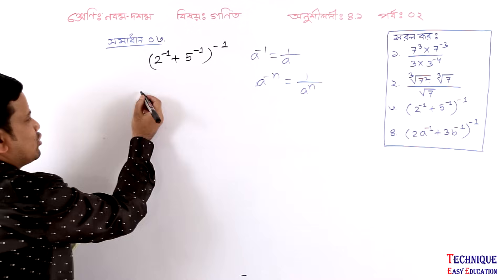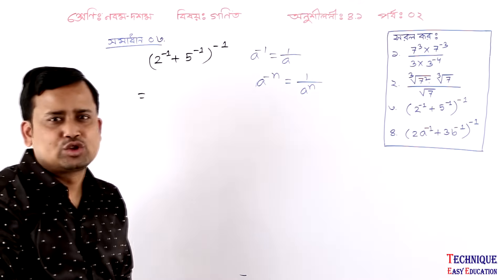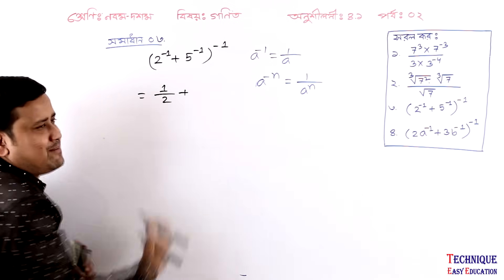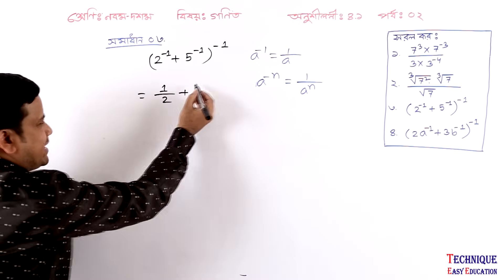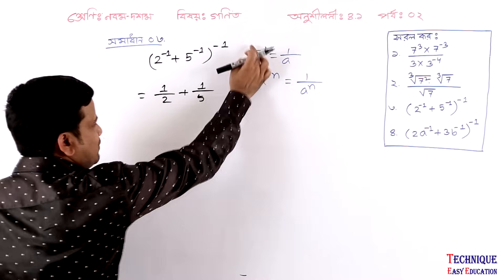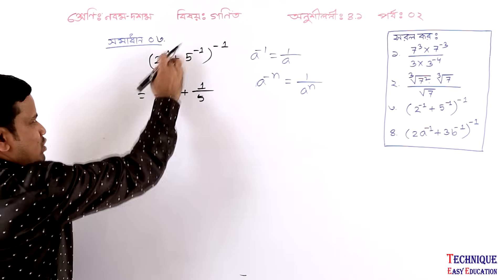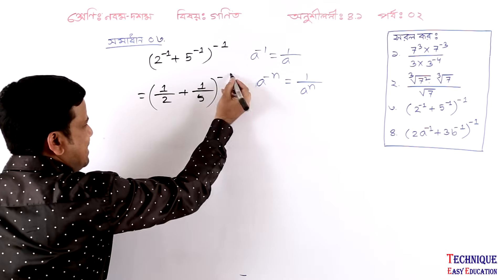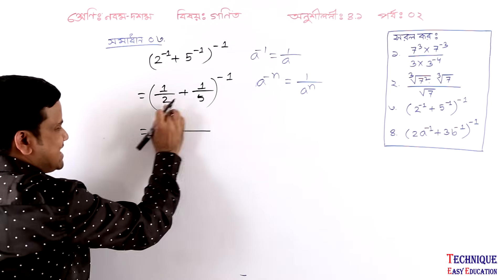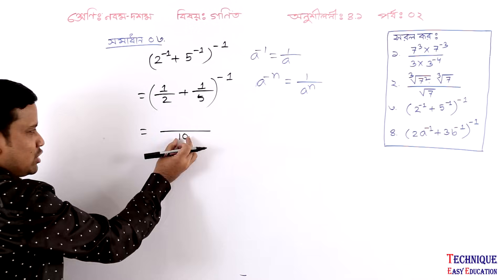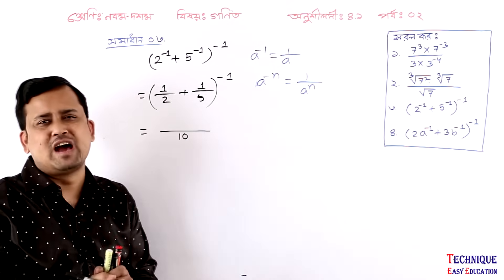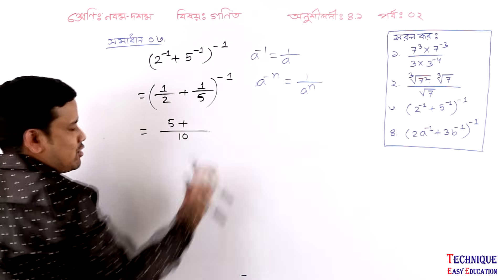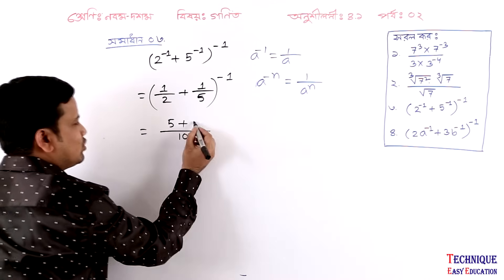Now we are going to do 2 to the power minus 1 — for example, 1 by 2. Plus 5 to the power of minus 1 — for example, 1 by 5. As for example, 2 to the power of minus 1 is 1 by 2. As for example, minus 1. Now 5 to the power of minus 1 — I will go back to the 5. So I will go back to the 5 of the 10. I will go back to the 2.